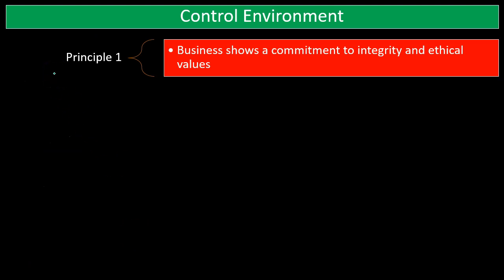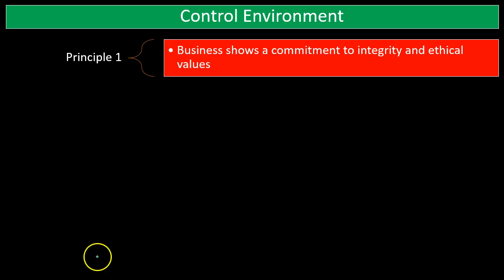We're going to start off with the control environment, listing the principles related to it. First principle: the business shows a commitment to integrity and ethical values. We're looking at this in terms of the controls of the organization as a whole — that the business shows a commitment to integrity and ethical values.